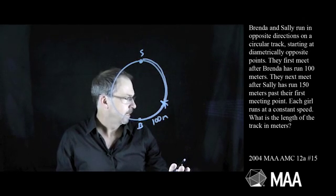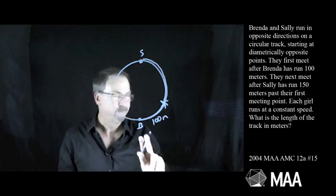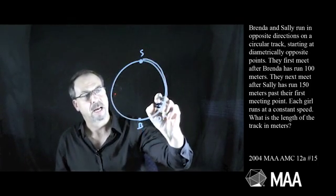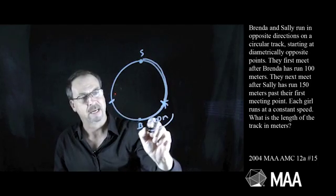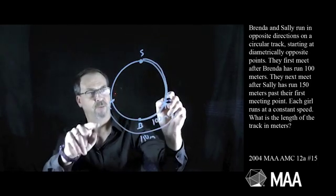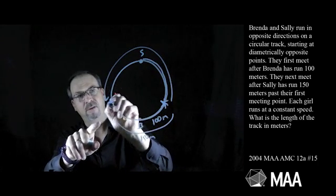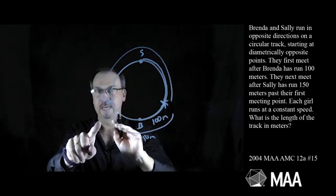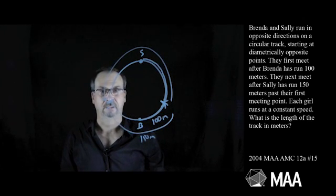They next meet after Sally has run 150 metres past their first meeting point. So Sally keeps going and she runs another 150 metres to get to some point over here. Sally goes an extra 150 metres, and Brenda keeps going this way and they meet over yonder. They each run at constant speed. What is the length of the track?